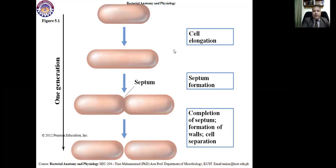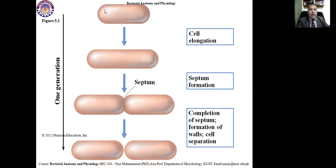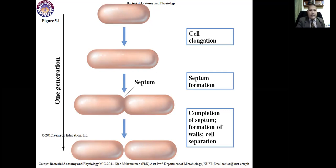In binary fission, one cell elongates, then cell elongation and pinching takes place, followed by septum formation and finally cell separation. When the septum formation is complete, each daughter cell is divided into two. The time required from one cell to two cells is the generation time. The cell elongates, its size increases, the septum forms, and upon completion of the septum it divides into two cells.